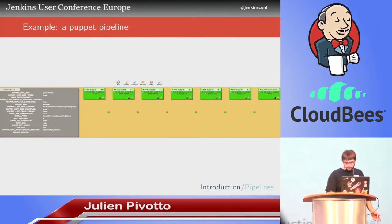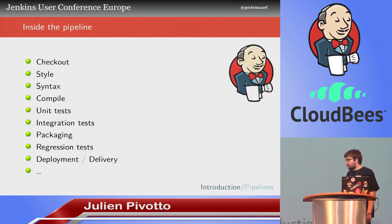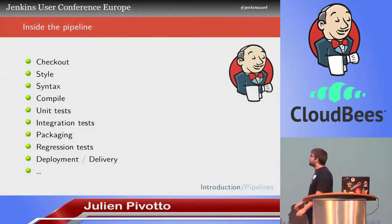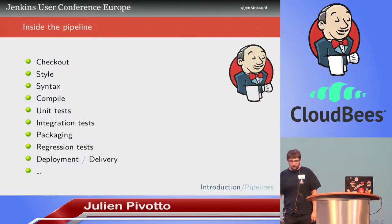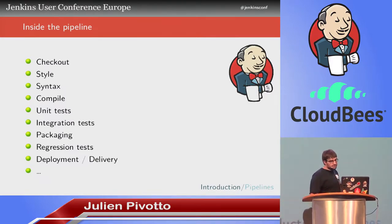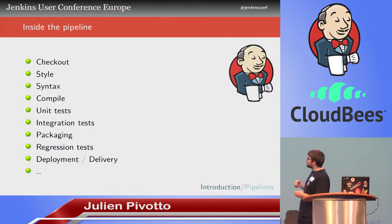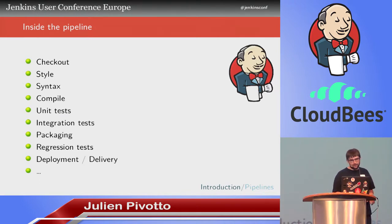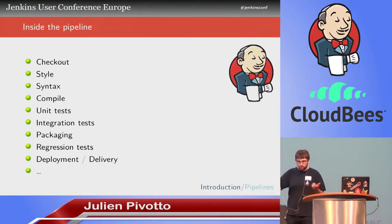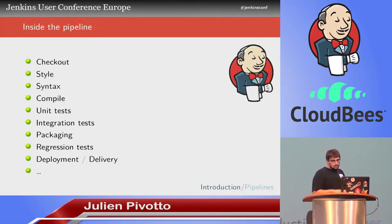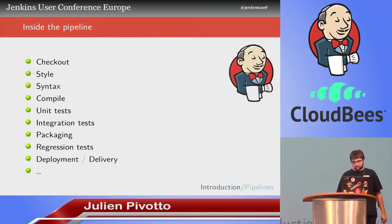So what can you put in your pipeline? A lot of things — from the checkout to the deployment, including packaging, all the tests, compilation, style check, syntax check, and everything you can think about. Some pipelines will just be four or five jobs, but other pipelines will have like 10 or 12 jobs. It depends on the kind of project.